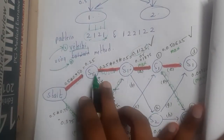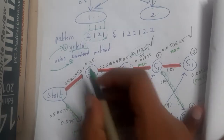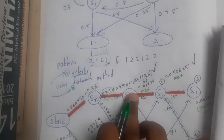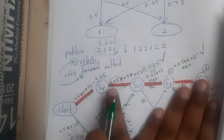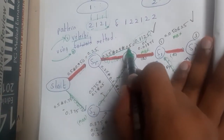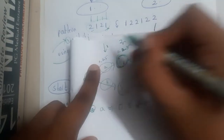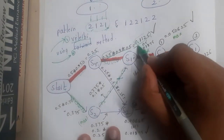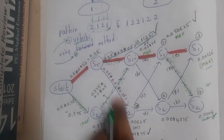Now let us calculate the next step. From S1 to S1: the value at S1 is 0.25. Multiply by the probability of S1 to S1, which is 0.9, then by the probability of S1 to 1, which is 0.5. So you always multiply three values at every step beyond the first. You will multiply them to get some value, and similarly solve for other arrows.